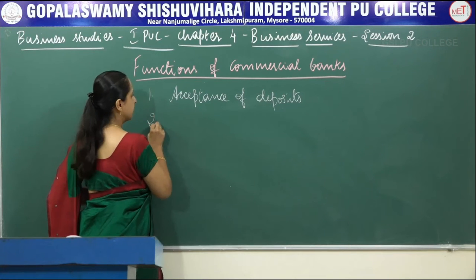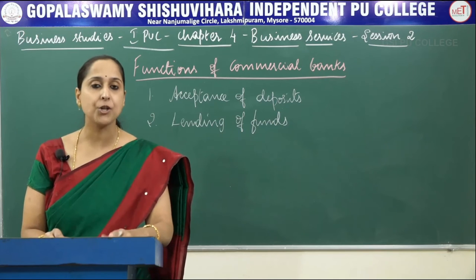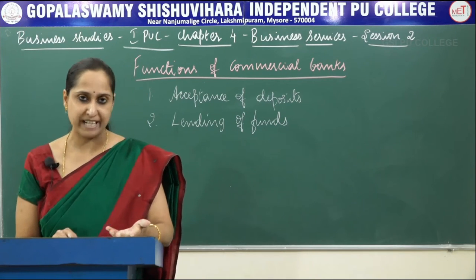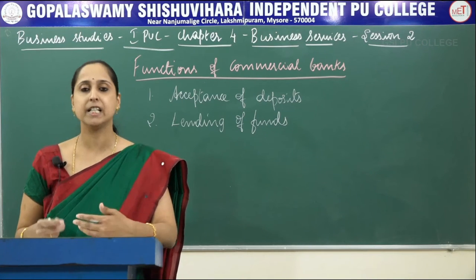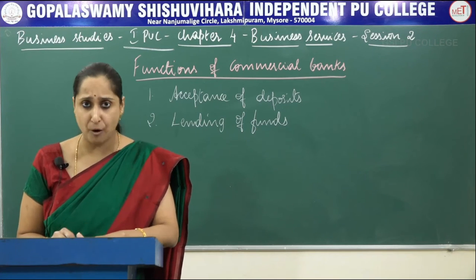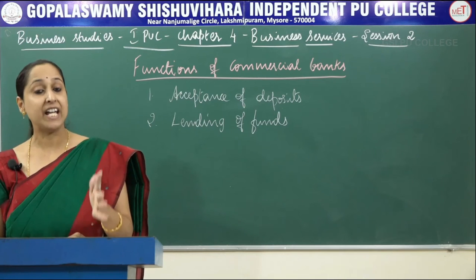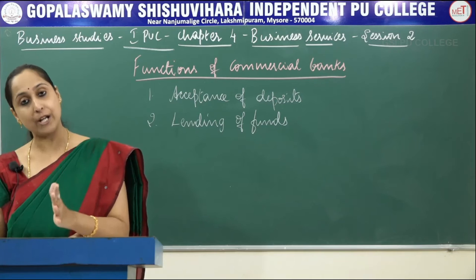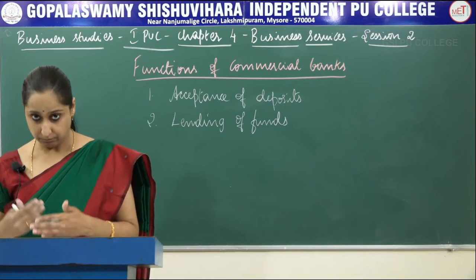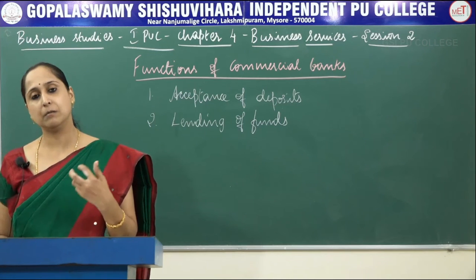The second function performed by commercial banks is lending of funds. Banks provide loans to borrowers out of the money received through deposits. These advances can be in any form — like cash credit. Cash credit is a facility to withdraw money from your current account without having a credit balance, but limited to the borrowing limit fixed by the commercial bank.